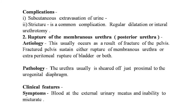The second injury is rupture of the membranous urethra — injury to the posterior urethra. Etiology: this usually occurs as a result of a fracture of the pelvis. About 10 to 15 percent of pelvic fracture cases sustain either rupture of the membranous urethra and extraperitoneal rupture of the bladder, or both. Pathologically, the urethra is usually sheared off just proximal to the urogenital diaphragm so that the prostate is displaced superiorly by the developing hematoma.